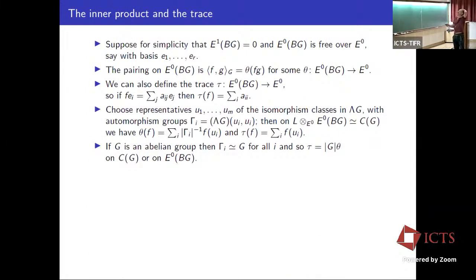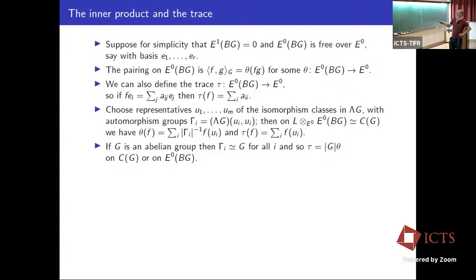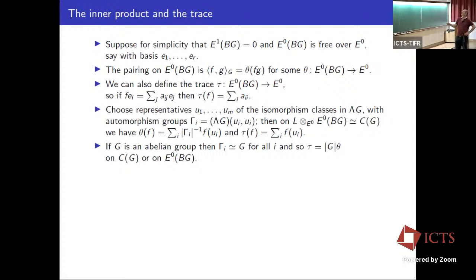For later use, here's a side point. Consider a finite group or groupoid G where E^1(BG) = 0 and E^0(BG) is a free module of finite rank. This is very common in calculations people have done — not universal, as Chris and Lee eventually found a counterexample — but we assume a free module basis E_1 up to E_R.